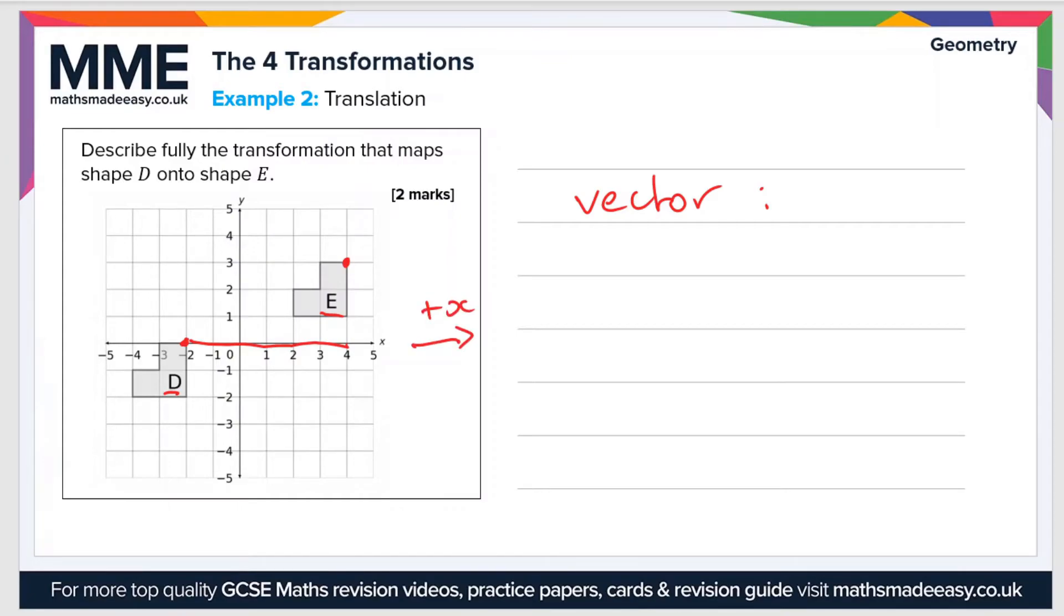And then it moves one, two, three in the y direction. That's a positive y direction, so it'll be three on the bottom of the vector. So to describe the full transformation, we would say it's translated by the vector (6, 3).